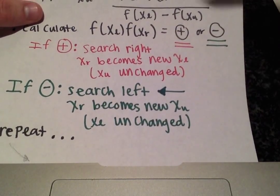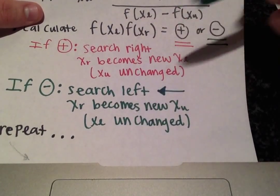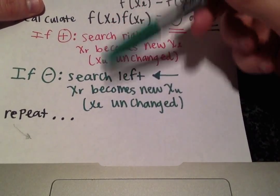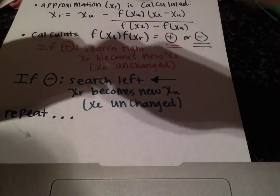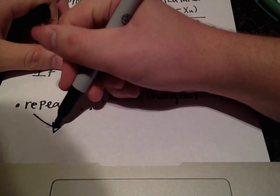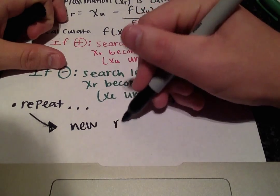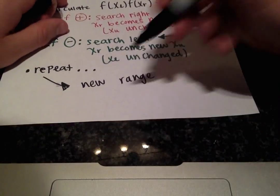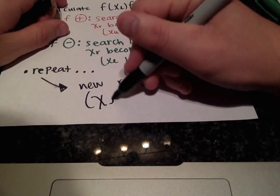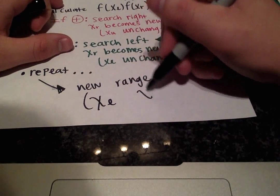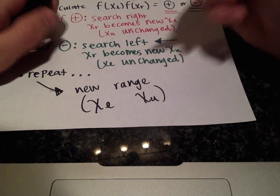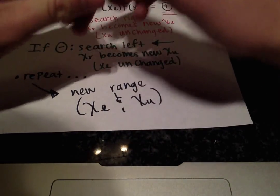And this is just one iteration. Once this is done you'll have a new range, which means new lower and upper limits.